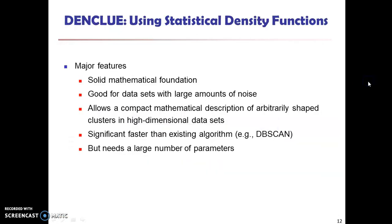The major features shown here: it can discover clusters of arbitrary shape, so the shape may be anything and that shape will be identified. It handles noise. We can have only one scan — that is sufficient. And it needs the density parameters as a definition condition. So the clusters will be formed based on the density, and we should know how the density can be measured. The density parameter must be known.